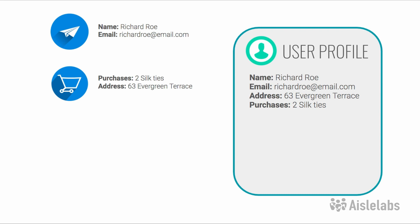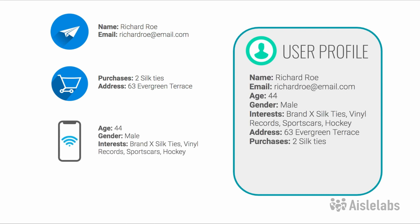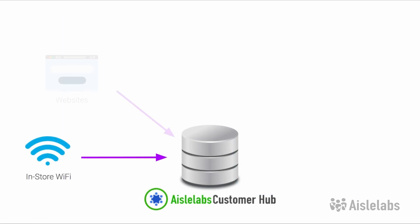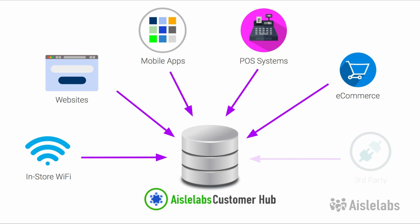Offline data capture at a physical location can be done when customers sign onto the guest Wi-Fi through a social media account. Here, their demographic and psychographic information such as age, gender, and interests can be captured when they opt in. Many brick and mortars now have their own mobile apps with loyalty programs that give discount points or for search applications. All of these first-party touchpoints are combined to automatically create a single profile filled with rich data, regardless of where the information was obtained.